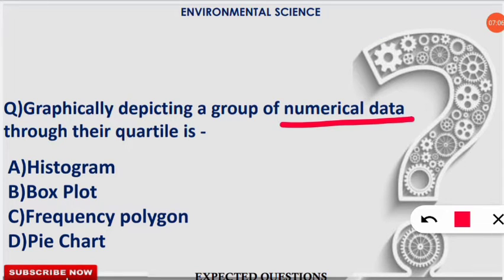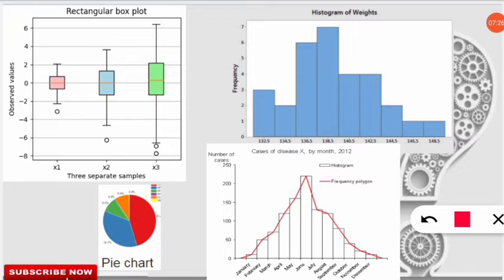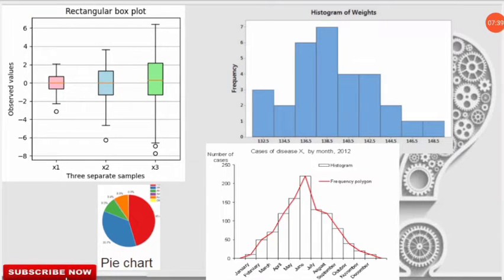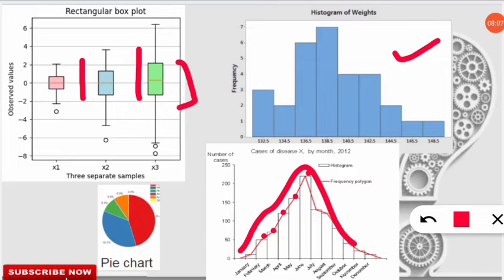The next question: graphically depicting a group of numerical data through their quartiles is known as what? The correct answer is option B — a box plot. A box plot represents data in vertical columns where the key feature is the quartile range. A histogram does not show quartile values. Joining the midpoints of histogram bars gives a frequency polygon, and a pie chart is the familiar circular representation.